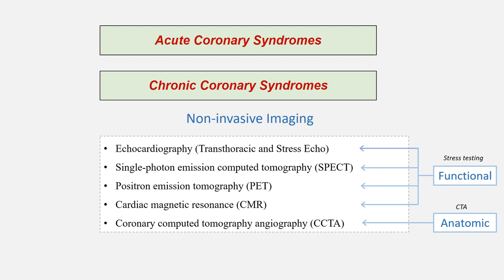The recent guidelines divide these tests into functional and anatomical testing. However, the additional fractional flow reserve testing for computed tomography imaging adds a layer of functional testing which could be appropriate in a subset of patients undergoing CTA. We must distinguish between a resting transthoracic echo, which is indicated in all patients with suspected cardiac chest pain, and the stress echocardiogram, which may be used to assess for ischemia in a subset of patients presenting with chest pain.